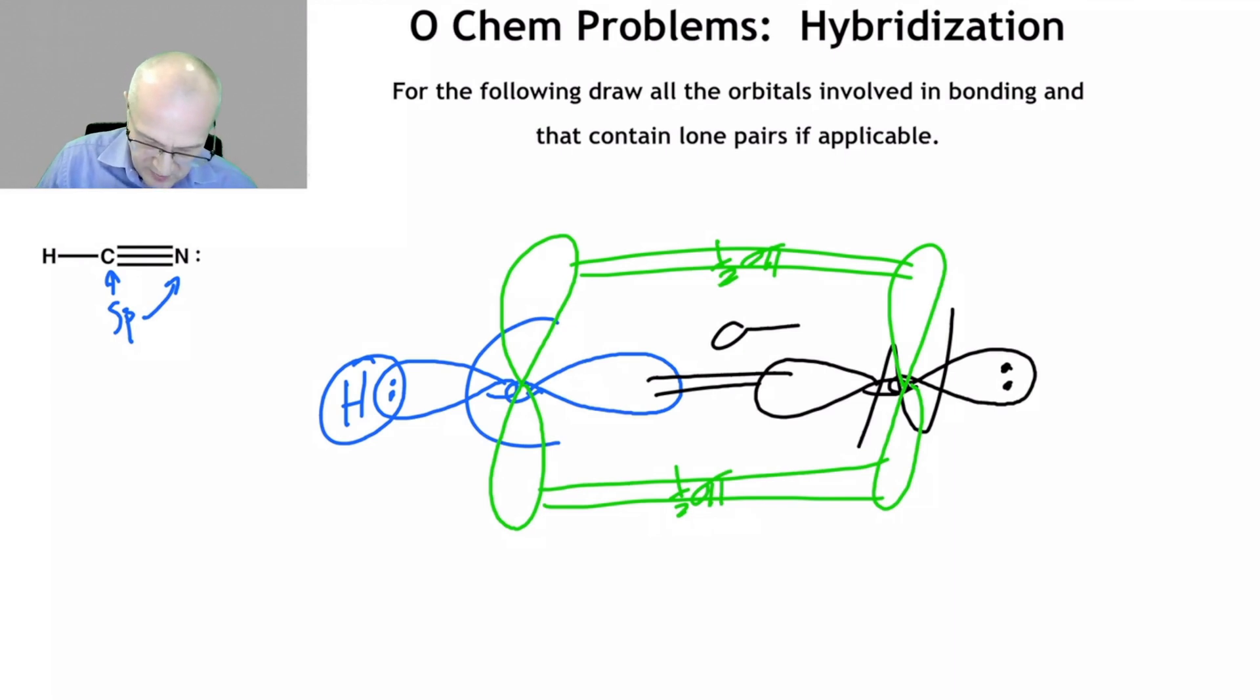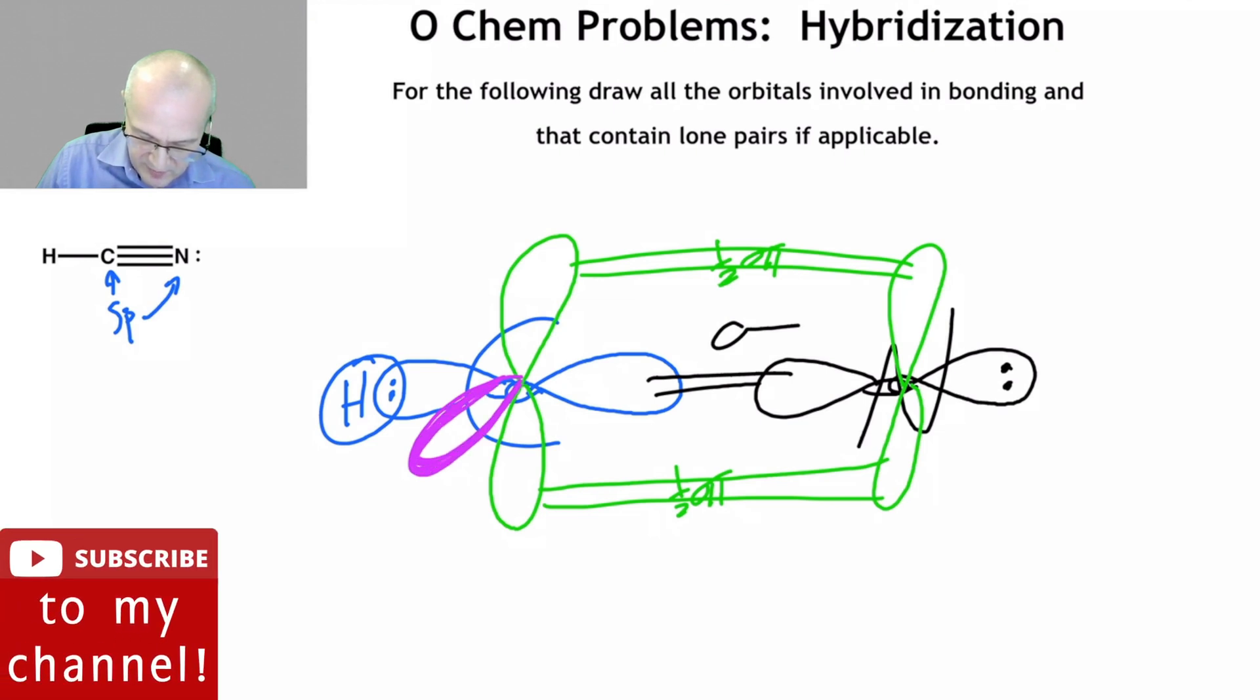And there has to be another Pi bond that's at 90 degrees to the first one. Pi bonds are always 90 degrees from each other.